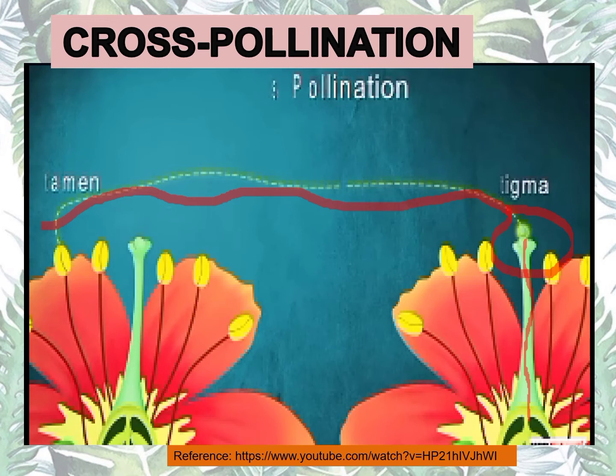Yung pollen grain ng flower number one nagtravel, napadpad sa flower number two — yun yung cross-pollination.